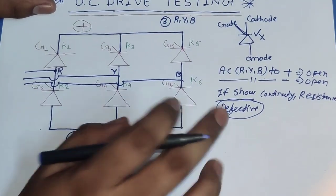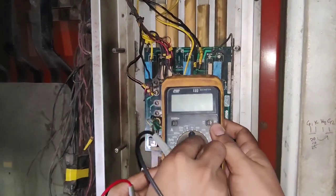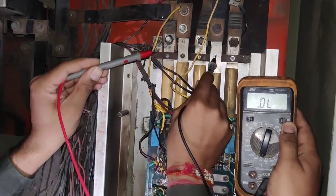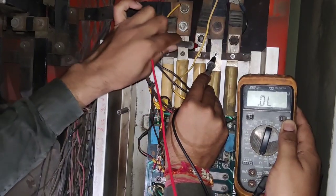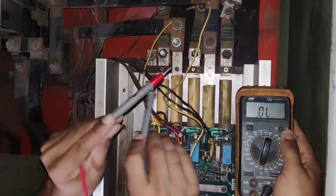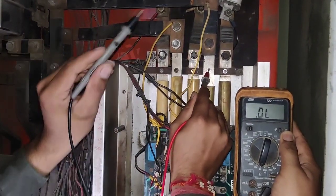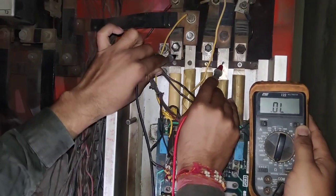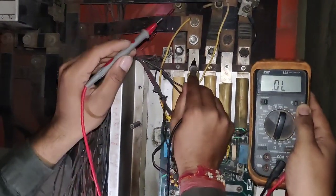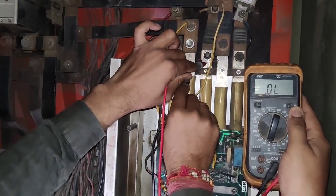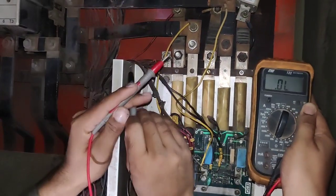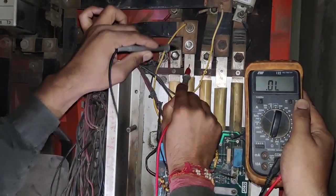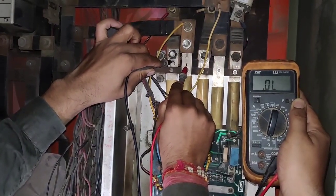First, learn how to perform this test. Set the multimeter on continuity or resistance mode. Now, put the negative probe on the negative terminal of the drive. Now check R — it should show open; Y — it should show open; at B terminal — it should show open. Now change the probes: put the plus probe on the negative of the drive and the negative probe on R — it should show open; Y — it should show open; and at B — it should show open. Now put the negative probe on the drive positive terminal and test R, Y, B — it should show open because anode to cathode no conduction happens. If any resistance is showing, that means your drive or thyristor is defective. In all combinations, no resistance or no continuity should be showing.